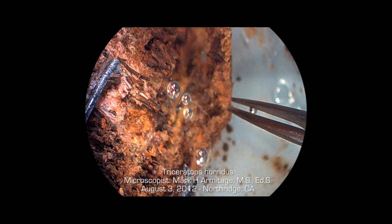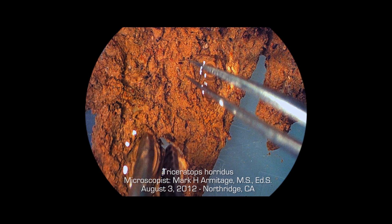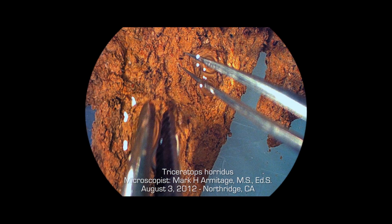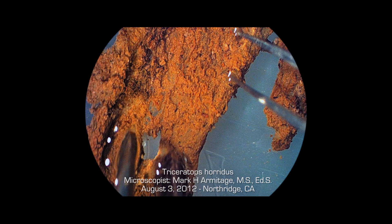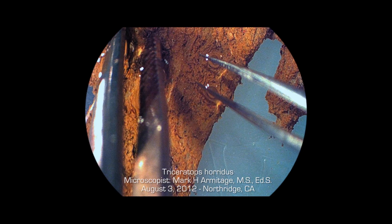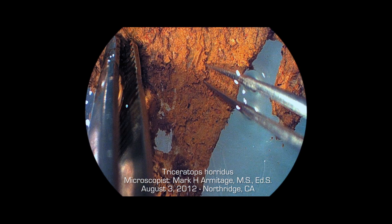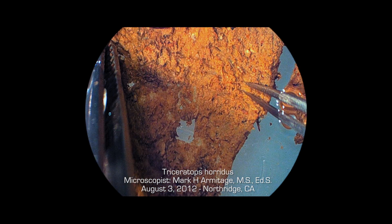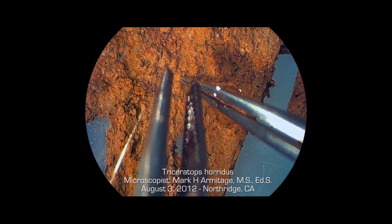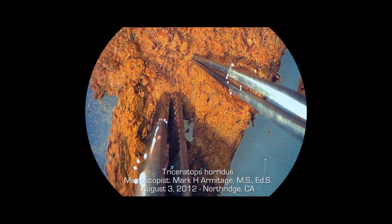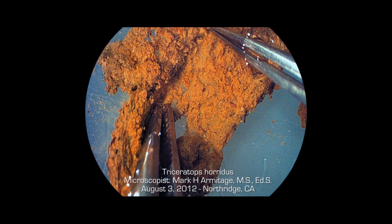Mark was then able to extract some very thin layers of elastic material away from the inner core of the horn, but he didn't have to decalcify the horn in order to do this. You can see it's stretchy, it's flexible. Notice how it's stretching — it's stretching almost twice its original size. This again is original dinosaur tissue that he peeled directly from the fossil.